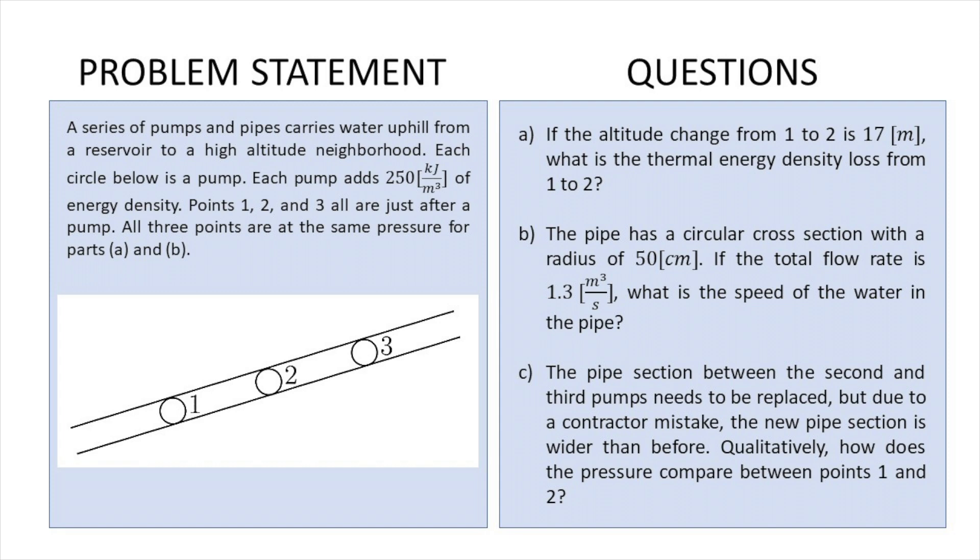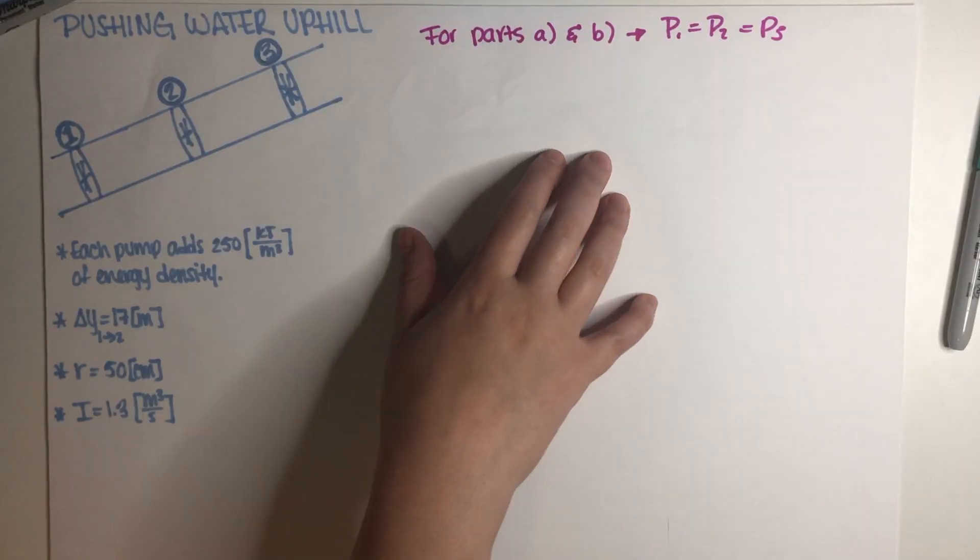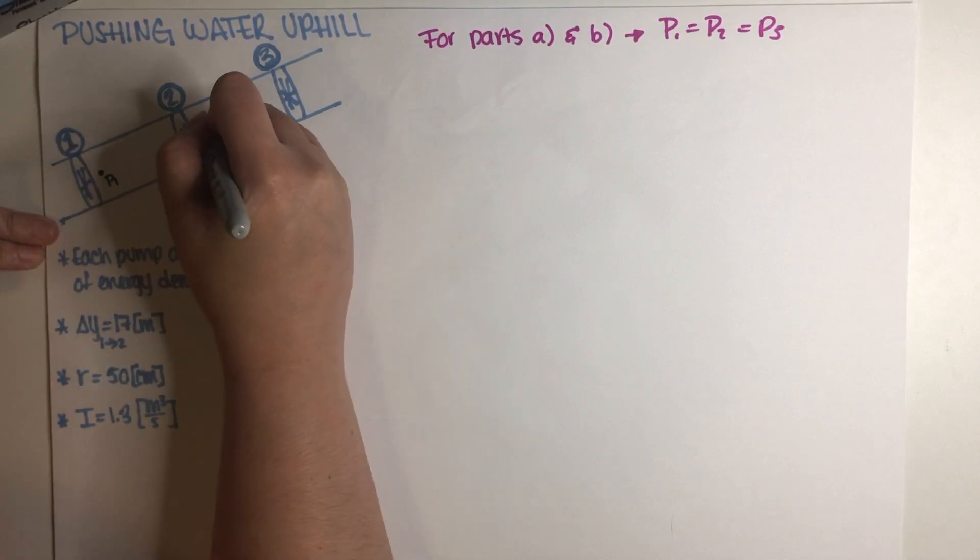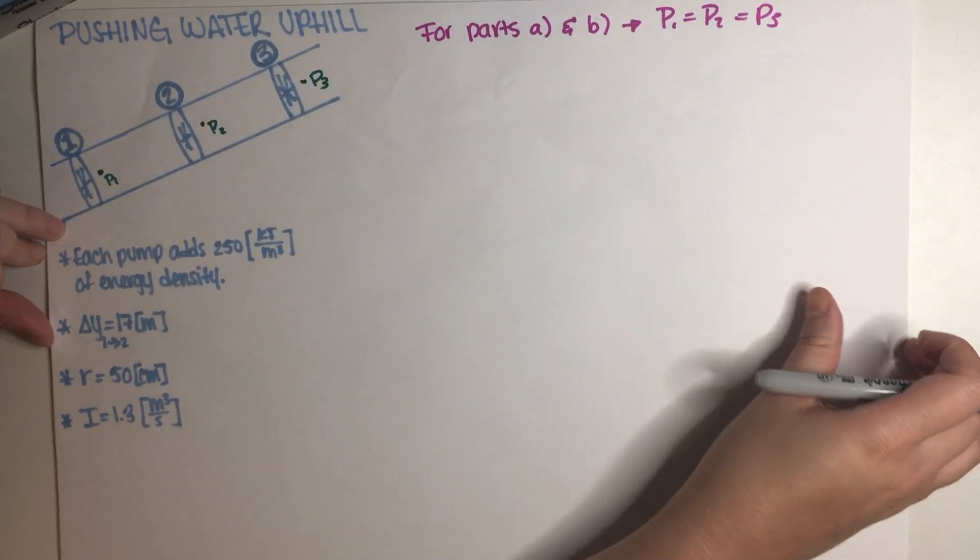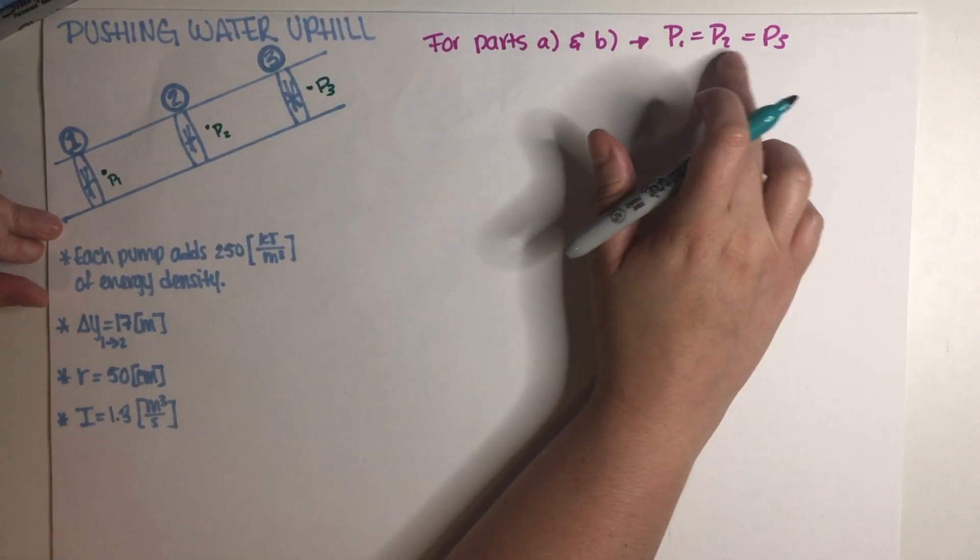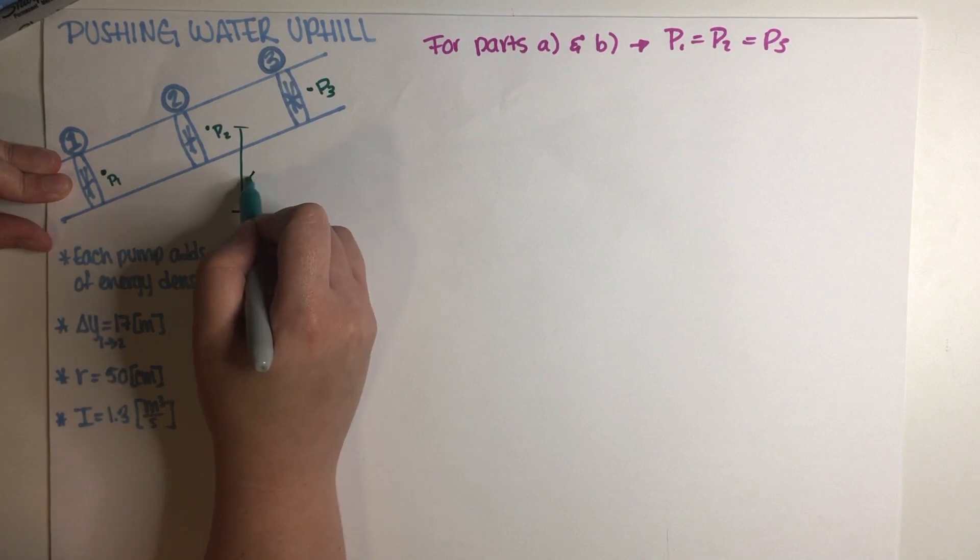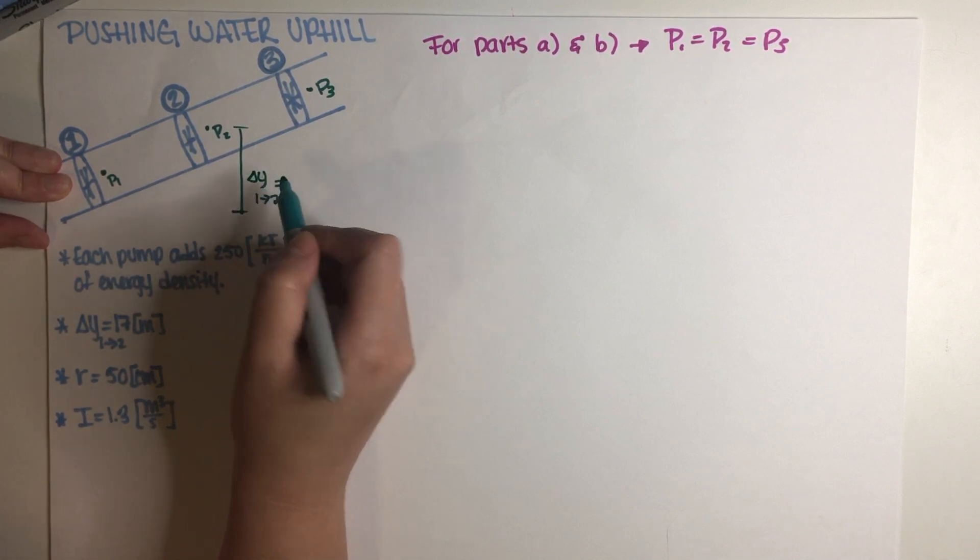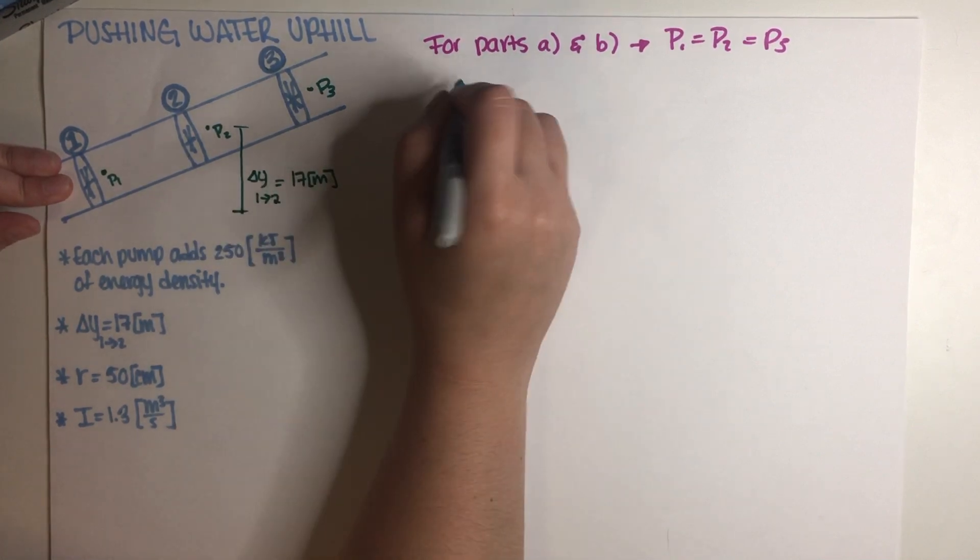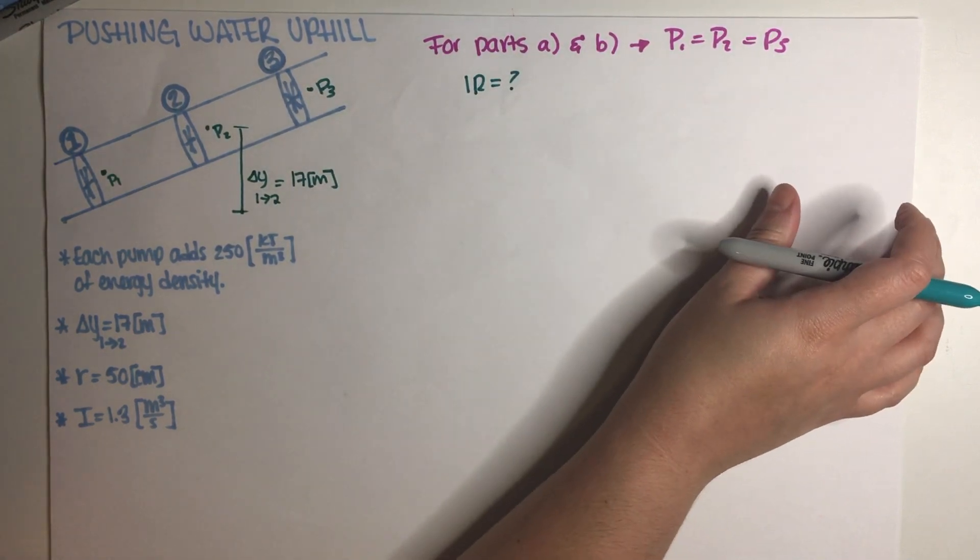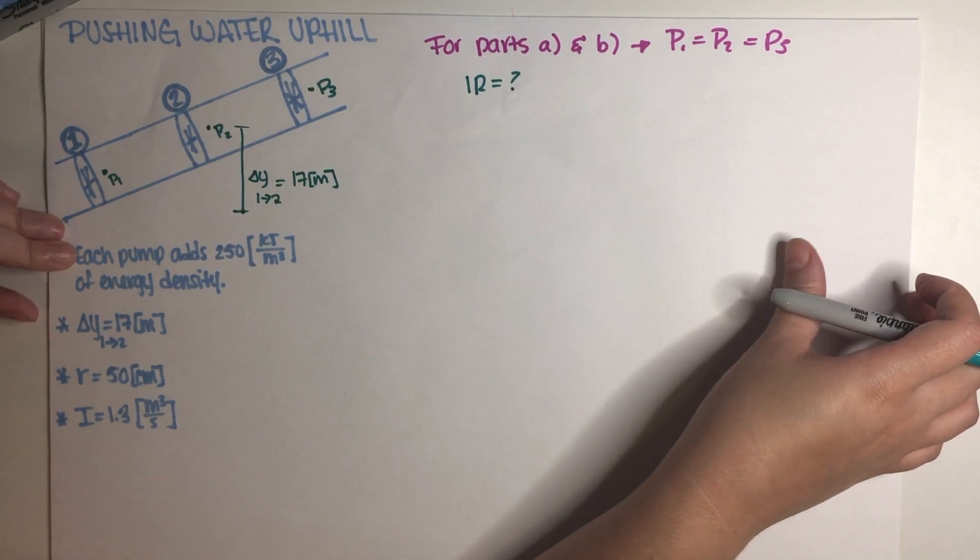If the altitude change from one to two is 17 meters, what is the thermal energy density loss from point one to point two? As you can see I have everything written down here in my notes. The points one, two, and three are right after each pump. So this is point one, this is two, and then this is three. And for parts A and B all of these pressures are exactly the same. Part one is saying that the altitude difference from point one to point two is equal to 17 meters. And they are asking me what is the thermal energy density loss, so what is IR basically. So let's just go ahead and figure this out.